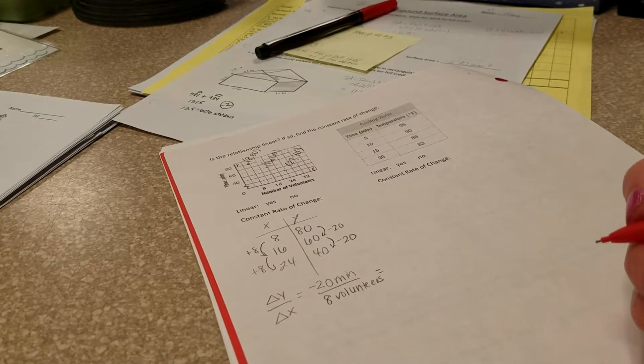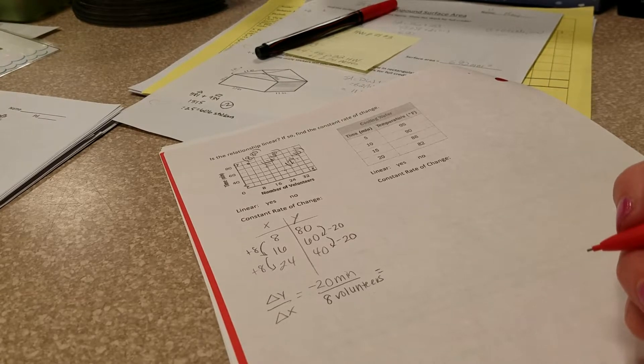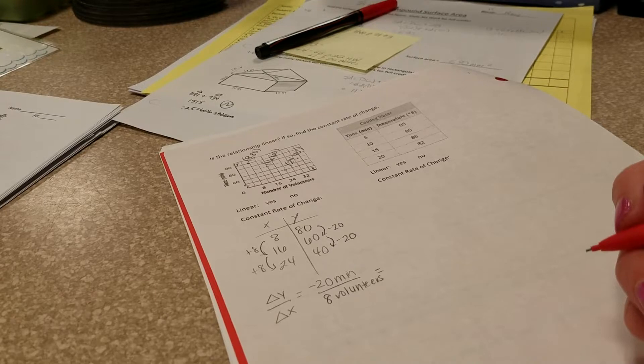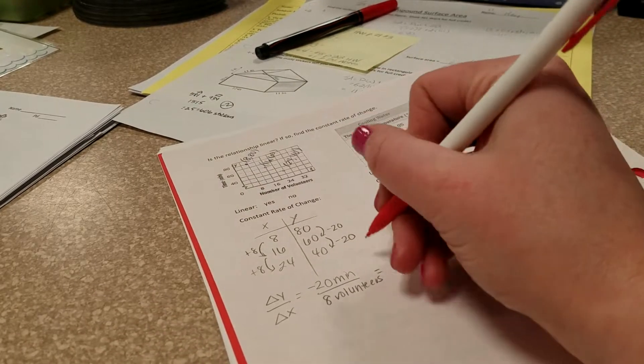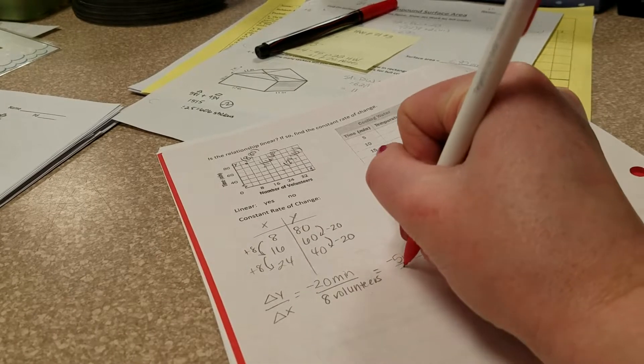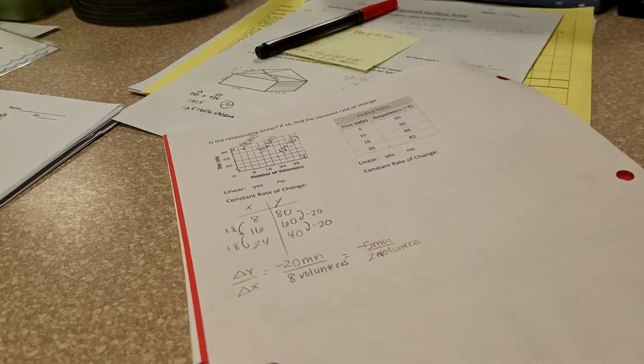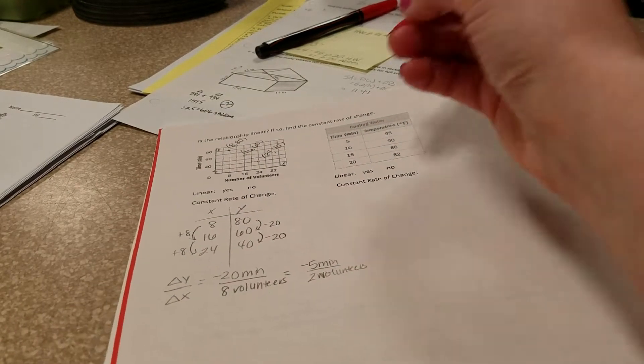And we're going to go ahead and actually divide this, but we're going to leave it as a fraction. So what you want to do is just go ahead and simplify this fraction. And you want to make sure that your fraction stays an improper fraction. So you're going to have negative 5 minutes per 2 volunteers. And you'll see why we're going to do that in the next lesson.